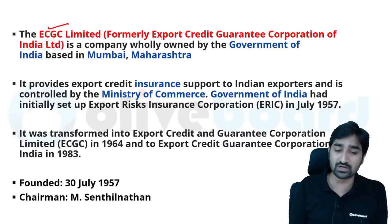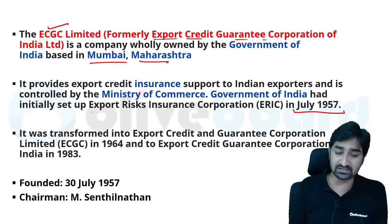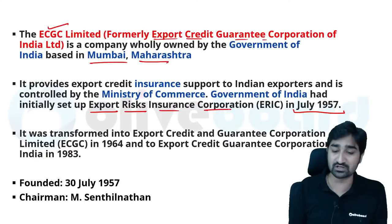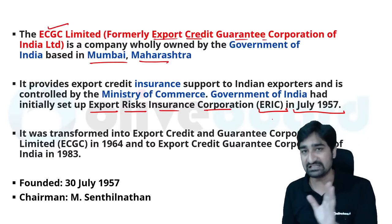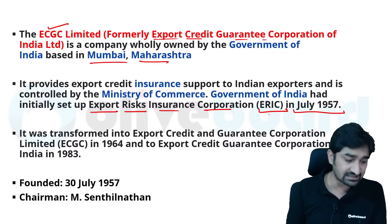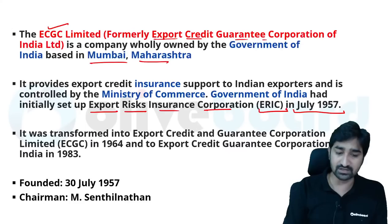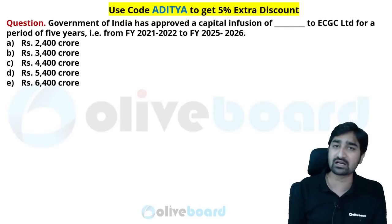ECGC Limited is formerly known as Export Credit Guarantee Corporation of India Limited. Its headquarter is in Mumbai, Maharashtra. It started in July 1957. The previous name was Export Risk Insurance Corporation — ERIC. The name was changed in the year 2014 to ECGC Limited, which is the current name we use.